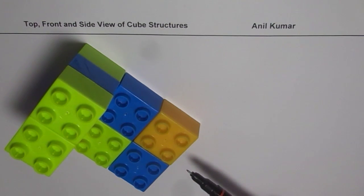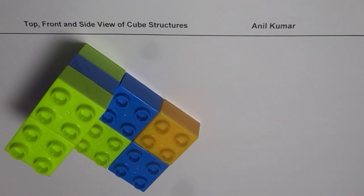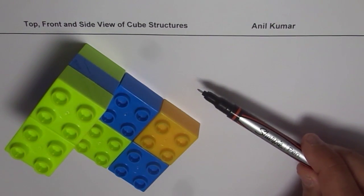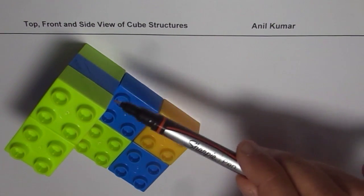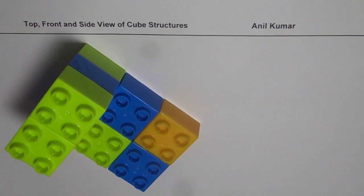From the front you see a step of two blocks going up, and from the sides you see an L-shape, which is kind of in the reverse direction. These are the views you see.